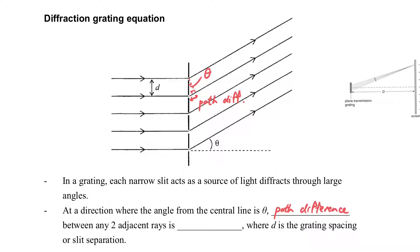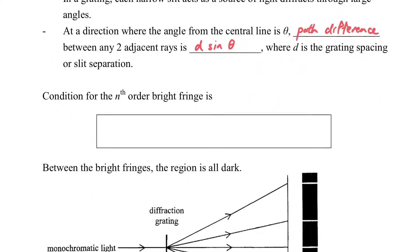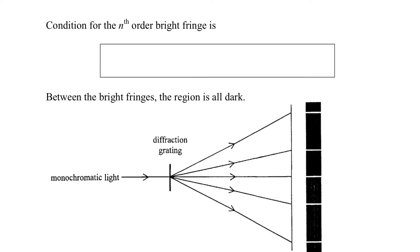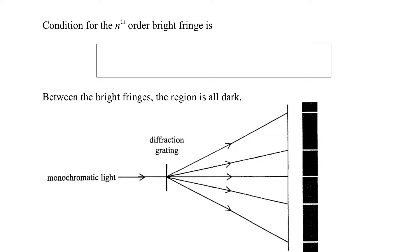With this figure, we can define the path difference as d sin θ. Actually, we have done it when we talked about double slit, so you can refer to that part if you can't get it at this moment.